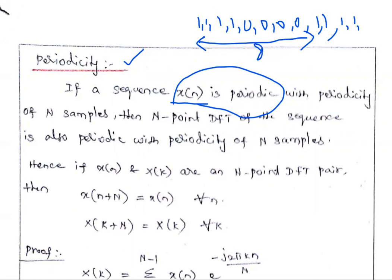If you want to find the DFT of this problem, instead of calculating the 16-point DFT, you just calculate the 8-point DFT. The next 8-sample answer will also repeat again and again. So if the sequence X(n) is periodic with a period of N samples, then the N-point DFT of the sequence is also periodic with the same N samples.